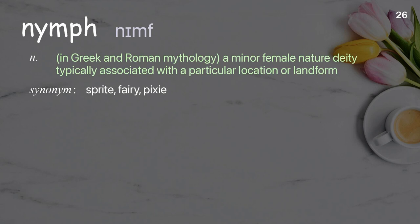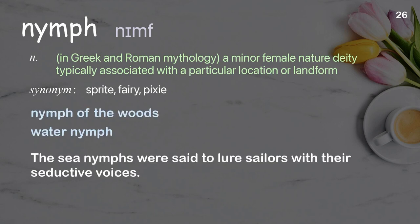Nymph: In Greek and Roman mythology, a minor female nature deity typically associated with a particular location or landform. Examples: Nymphs. Nymph of the woods. Water nymph. The sea nymphs were said to lure sailors with their seductive voices.